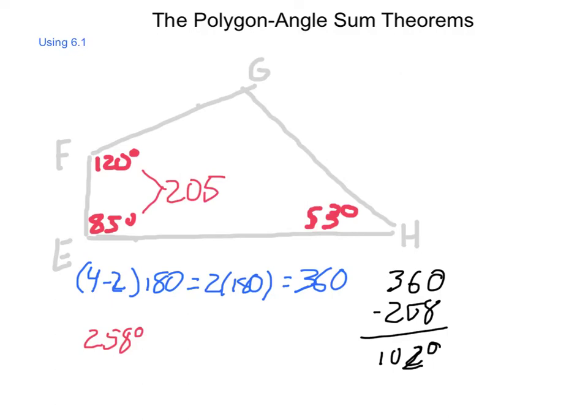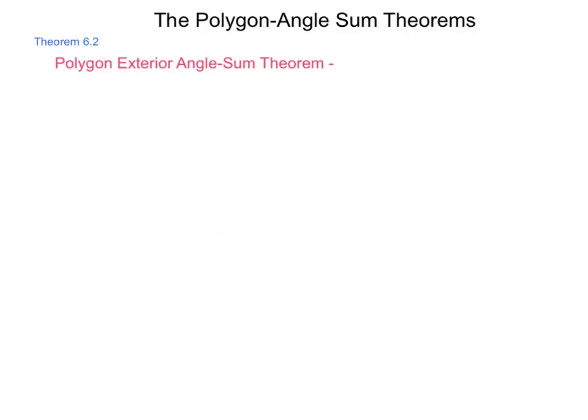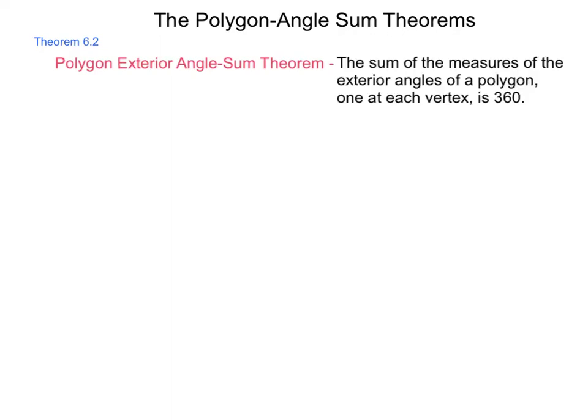We've dealt with the interior angles of polygons. Now, let's take a look real quick at a theorem involving the exterior angle. Theorem 6.2 is the Polygon Exterior Angle Sum Theorem, and it states, the sum of the measures of the exterior angles of a polygon, that's one at each vertex, is 360 degrees.